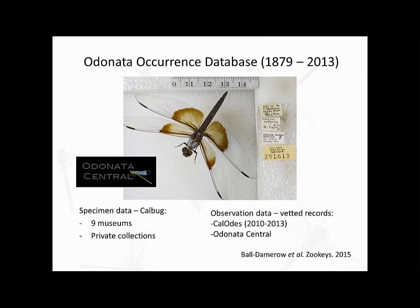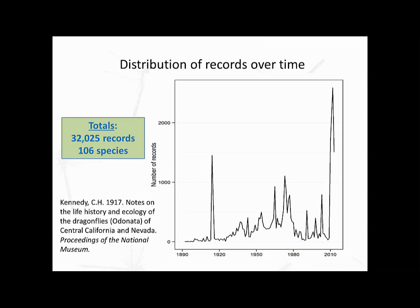The Odonate occurrence database I mentioned has records spanning from 1879 through 2013. It was part of CalBUG, an effort to database entomology collections throughout the state. All of the major entomology collections throughout California are included, as well as two of the largest collections outside of California. We also included vetted observation data from a local enthusiast group called CalOADS that report Odonate sightings in Odonata Central. This database includes over 32,000 records of all 106 species of Odonates known to occur here.